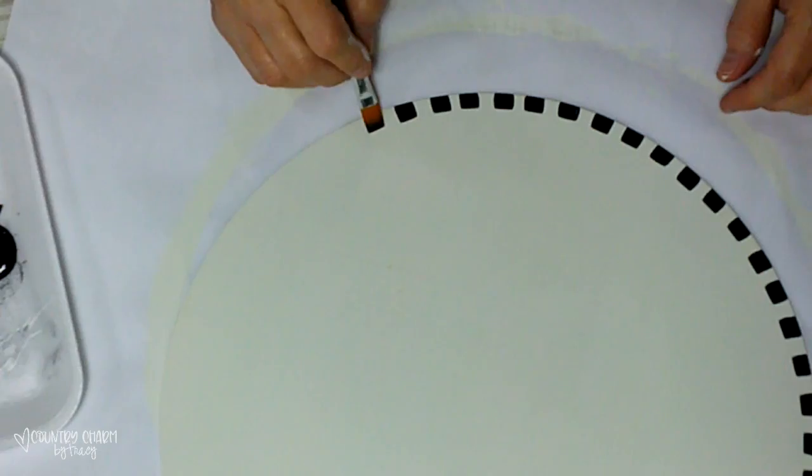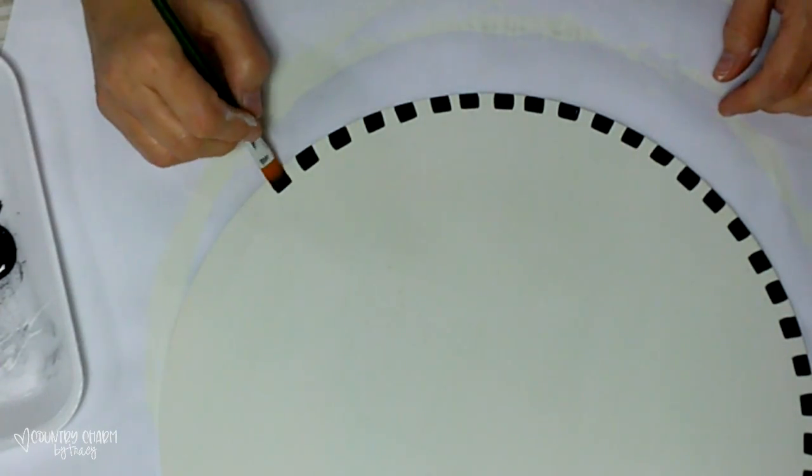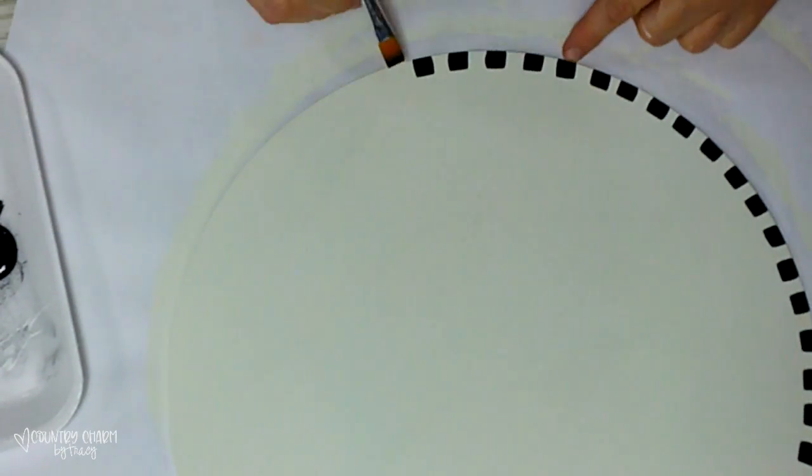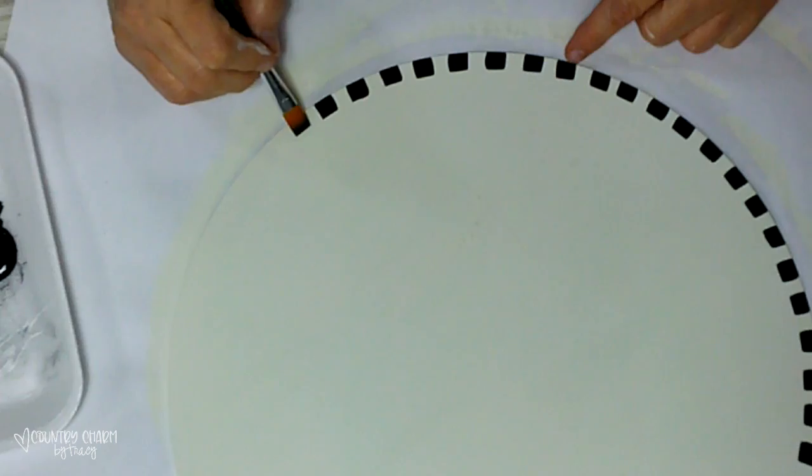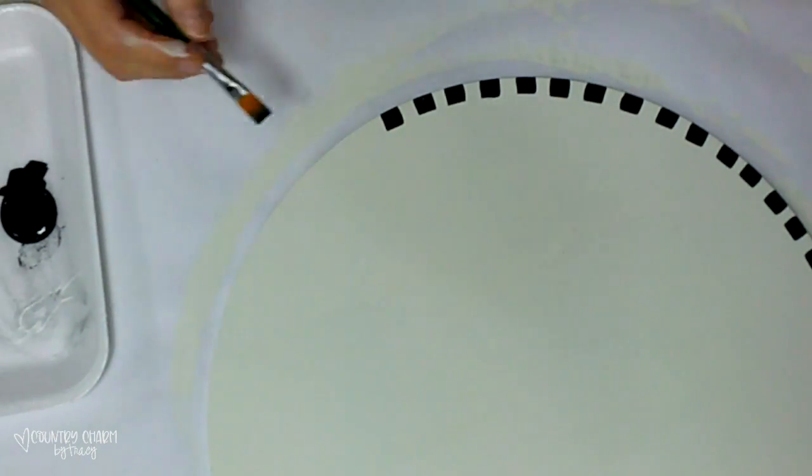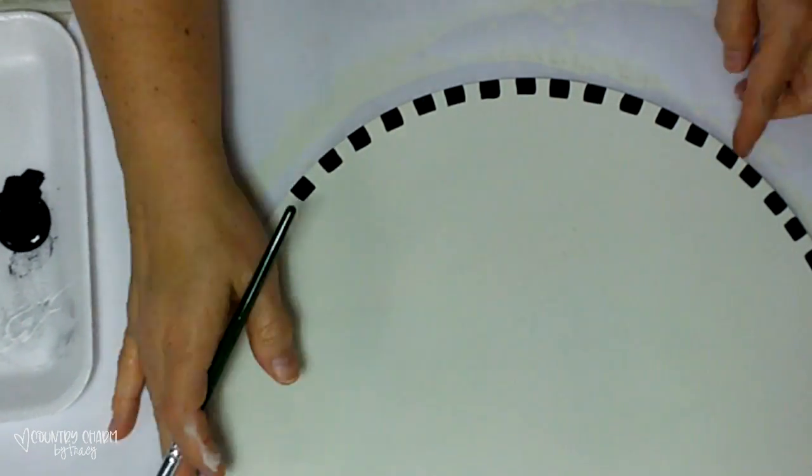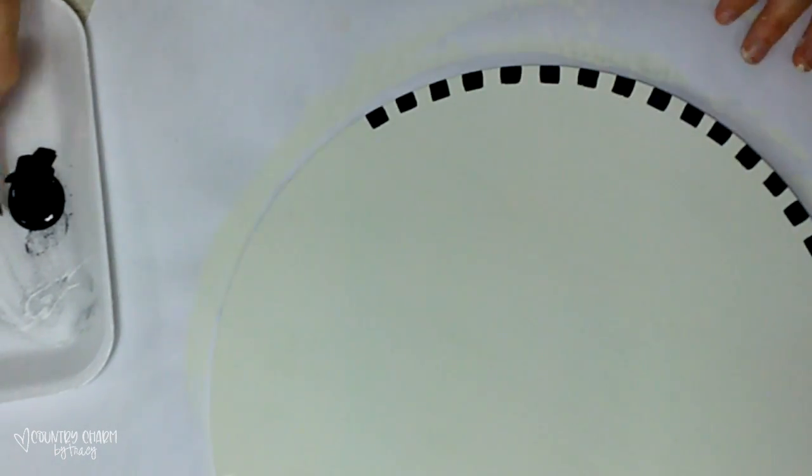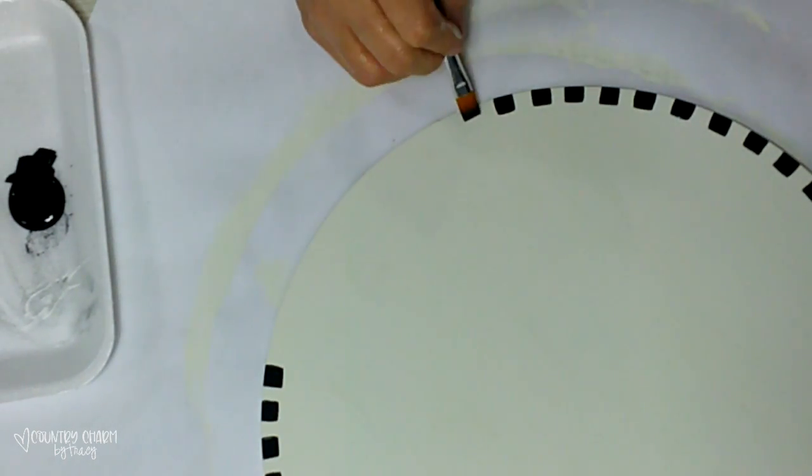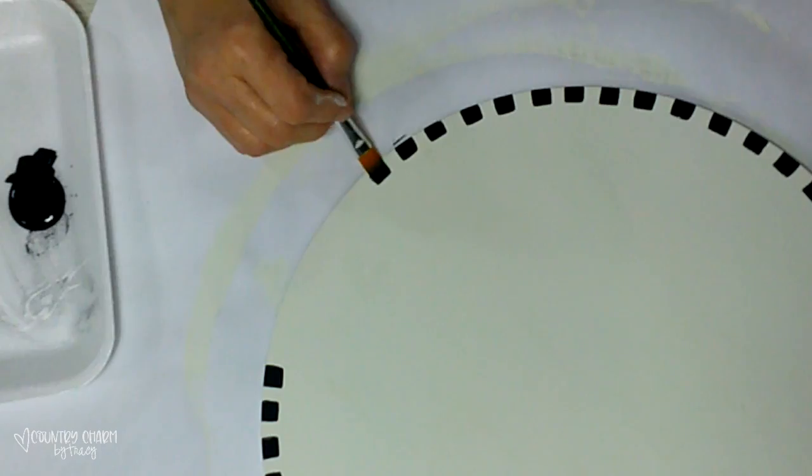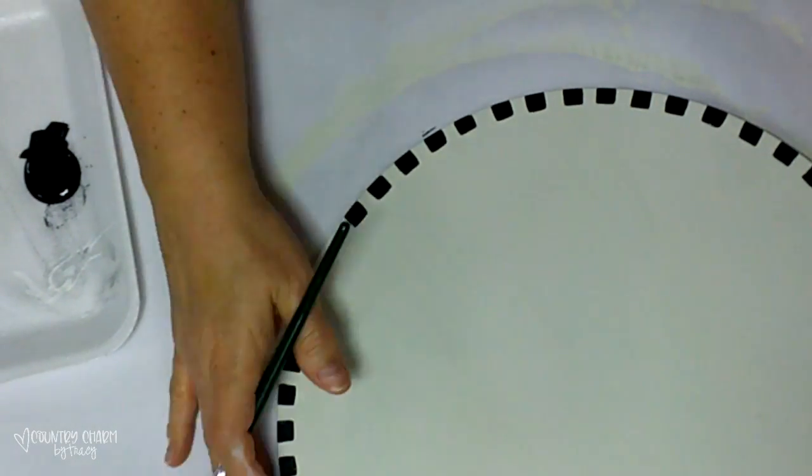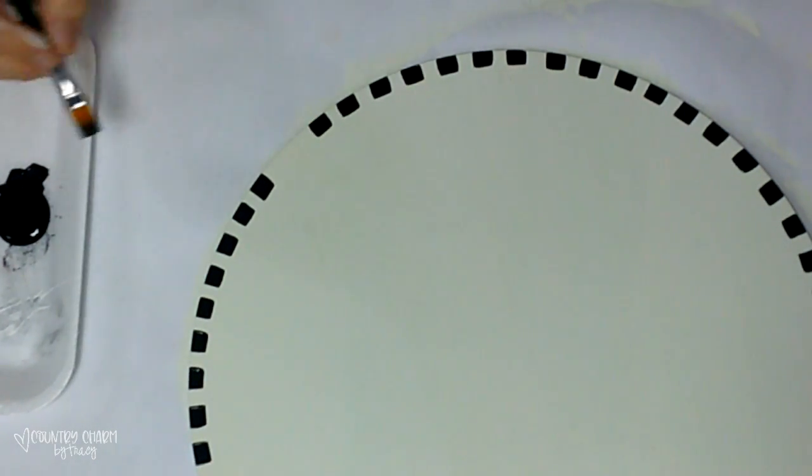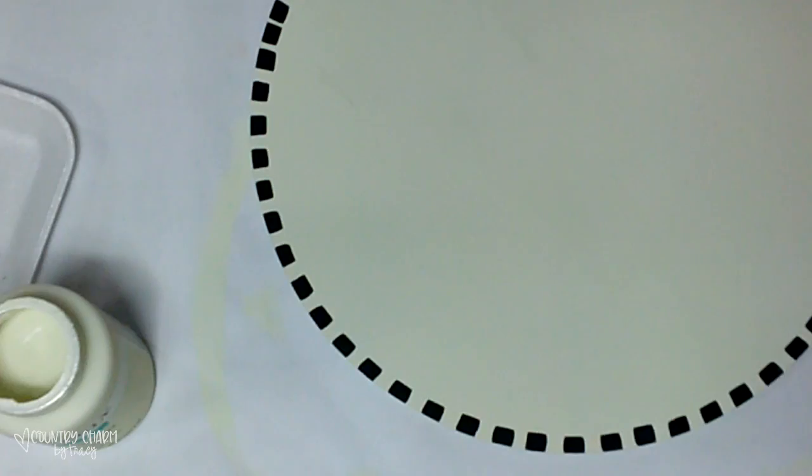So I'm just going around the edge of it about a half of an inch into the edge, and then I'm going to show you when I get here to the end because I got my stripes just a little bit too close together at the end. So what I do is I just go back and thin those up a little bit when it is too close together.